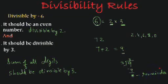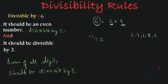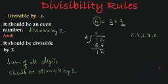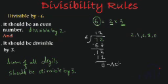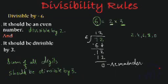Now let's verify by checking if 72 is divisible by 6. We divide: 6 times 1 is 6. Subtract — 7 minus 6 is 1. Bring down the 2, it becomes 12. 6 times 2 is 12. And 12 minus 12 gives remainder 0. Since the remainder is 0, 72 is completely divisible by 6, and this verifies our divisibility rule: the number should be an even number, or divisible by 2, and also divisible by 3.